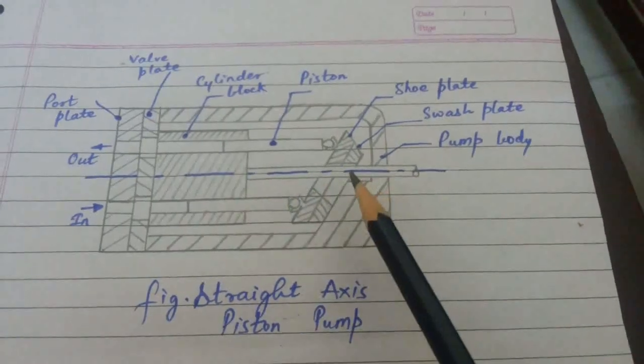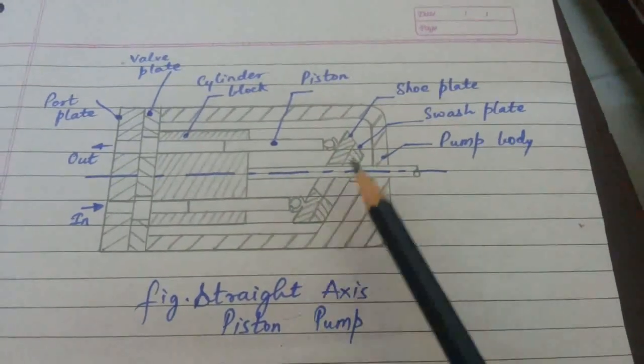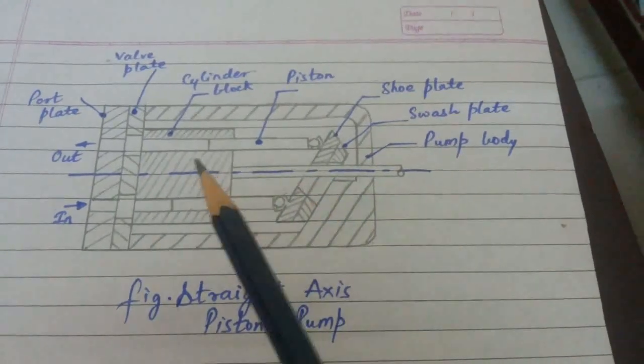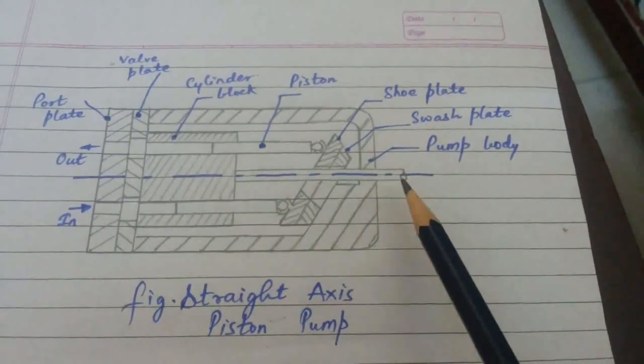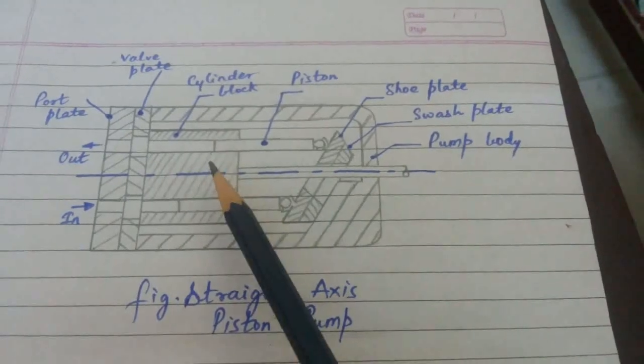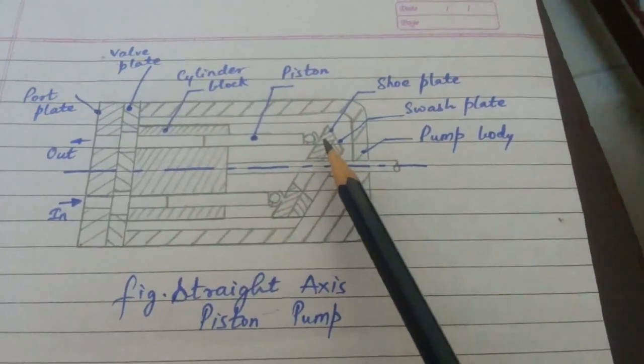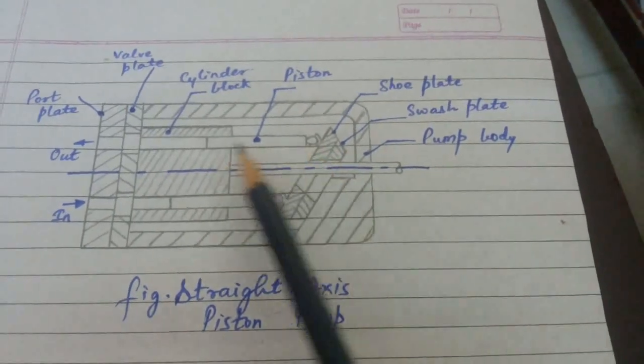And the shoe plate is mounted on the squash plate. The squash plate is at an angle, if we compare it to the axis. If we change the squash plate angle, then the discharge will change. When the shaft is rotated, then the cylindrical block is rotated. So the shoe plate is rotated. And that's why the piston is moved in and out.